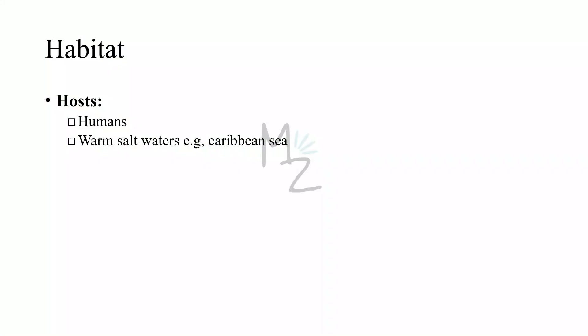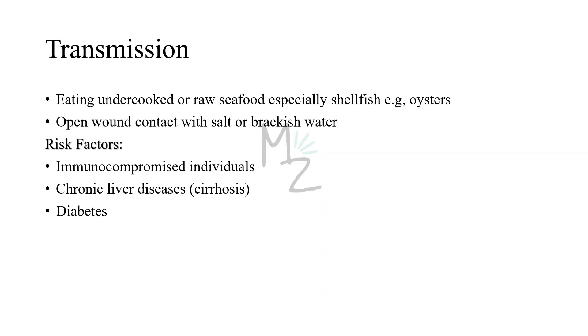Habitat and hosts: Vibrio vulnificus causes diseases in humans, so humans are its hosts. They are found in warm salt waters such as the Caribbean Sea. Transmission occurs while eating undercooked or raw seafood, especially shellfish — for example oysters — and also when an open wound comes into contact with salt or brackish water containing Vibrio vulnificus. Risk factors include people who handle shellfish, people with skin wounds, people with chronic liver diseases such as cirrhosis, and immunocompromised individuals.